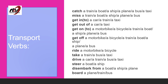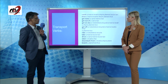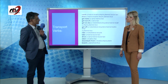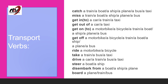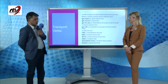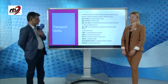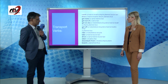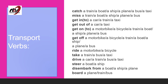Let's see some transport verbs. We can catch a train, a boat, a ship, a plane, a bus, or a taxi. We can miss a train, a boat, a ship, a plane, or a bus. We get in or into a car, train, or taxi, and get out of a car or taxi. We get on to a motorbike, bicycle, train, boat, ship, plane, or bus. We get off those same vehicles. We ride a motorbike or bicycle. We can steer a boat or ship, and we board a plane, train, or bus.